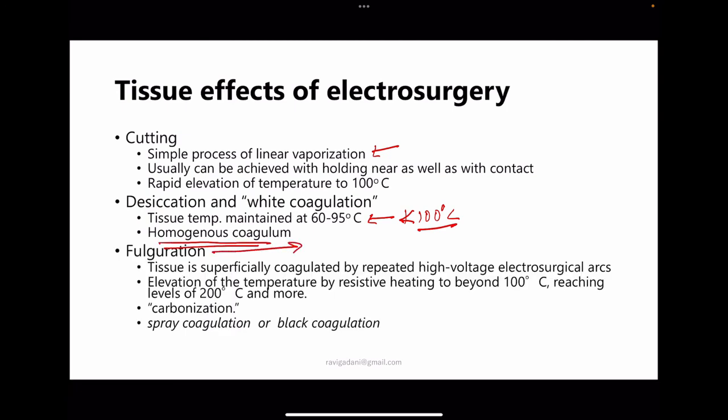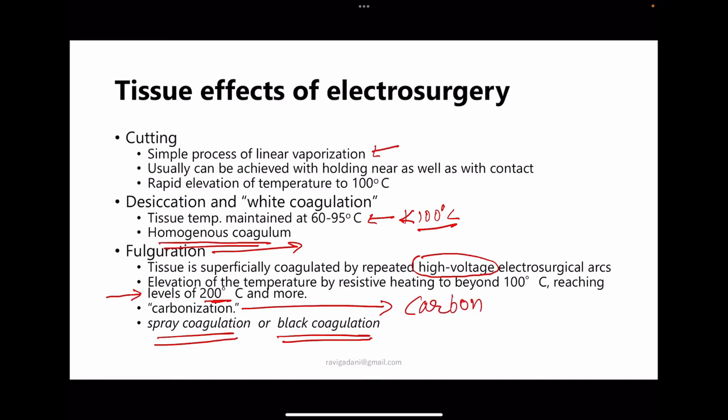Desiccation or white coagulation occurs at temperatures below 100°C: the cell wall is damaged, water leaks out, remaining cell contents form a coagulum as protein denatures, with hydrophilic bonds breaking and reforming as the cell alternately heats and cools — creating a homogeneous coagulum. Fulguration uses very high-voltage electrosurgical arc, elevating temperature to 200°C or more; the carbon within the cell is released, producing black eschar — also called black coagulation, spray coagulation, or carbonization.